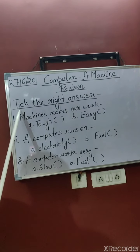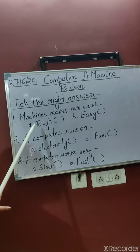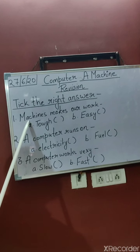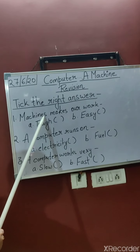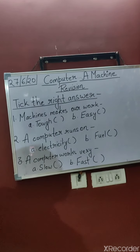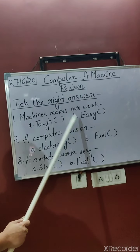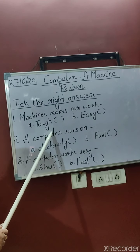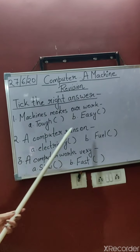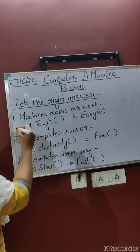Now let's look at the MCQ questions — 'Pick the Right Answer.' Question one: machines make our work — a) tough or b) easy? The right answer is b) easy. Machines make our work easy. Question two: a computer runs on — a) electricity or b) fuel? A computer runs on electricity.